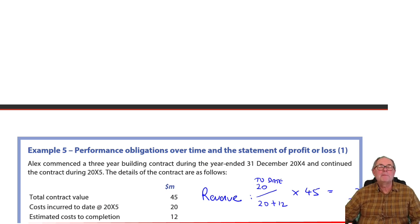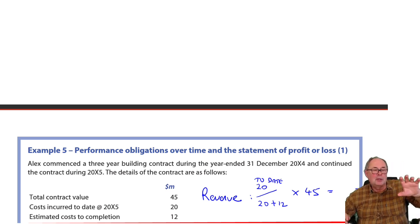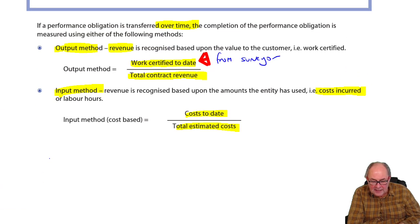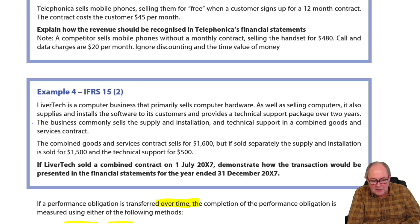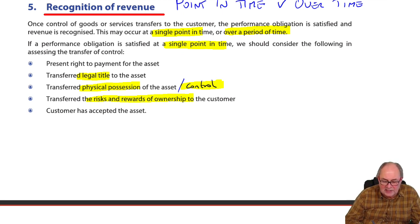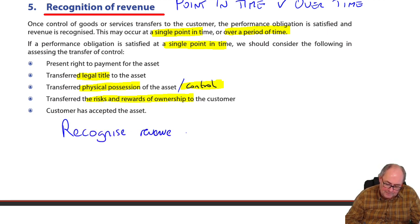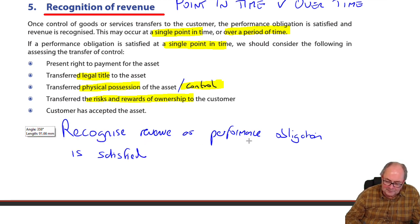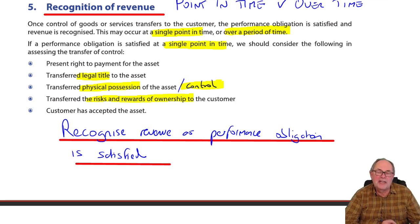Five-stage model: identify the contract, its obligations, and the price; allocate the price to the obligations; and recognize the revenue as the performance obligation is satisfied. The key word is: recognize revenue as the performance obligation is satisfied. So there's a review of the five-stage revenue model.